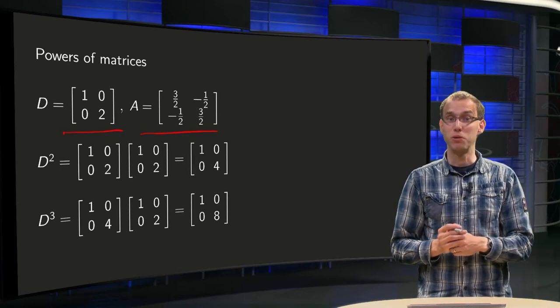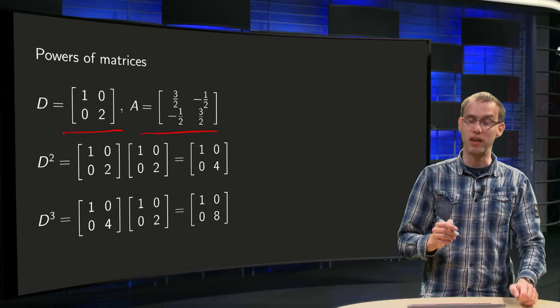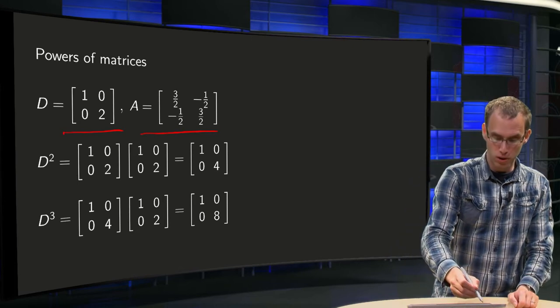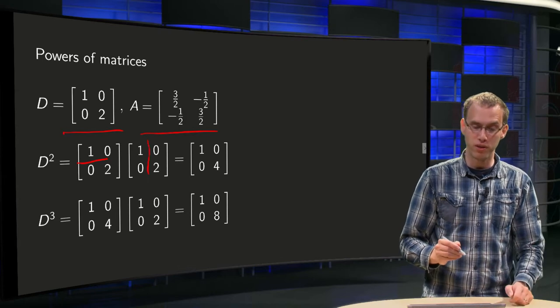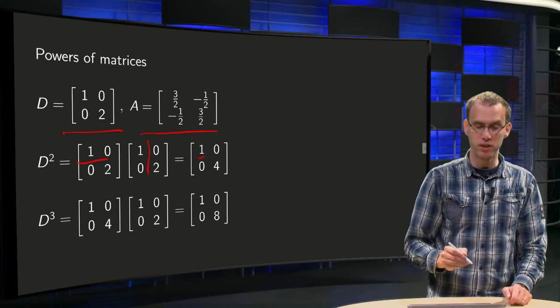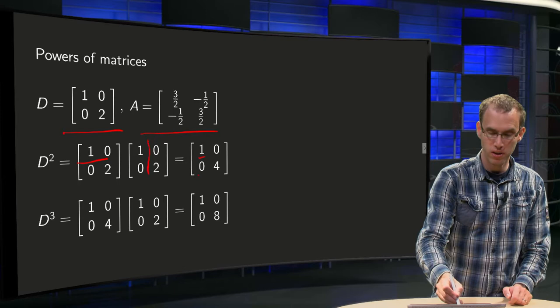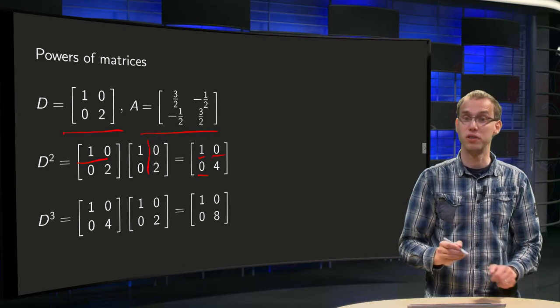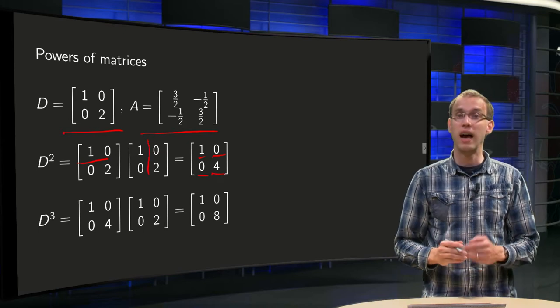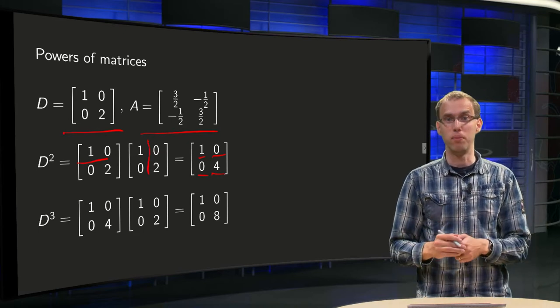What happens if we try to compute powers of a diagonal matrix? Well, let us do D squared first, so use the row column rule. Inner product 1,0 with 1,0 equals 1, inner product 0,2 with 1,0 equals 0, inner product 1,0 with 0,2 equals 0, and inner product 0,2 with 0,2 equals 4. Now you see, D squared yields another diagonal matrix. Is that a coincidence?